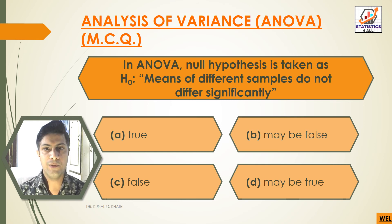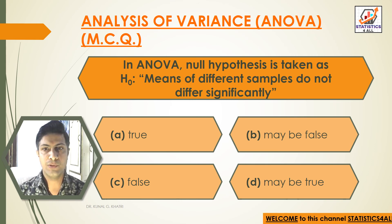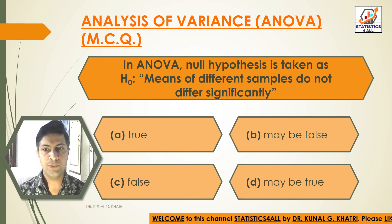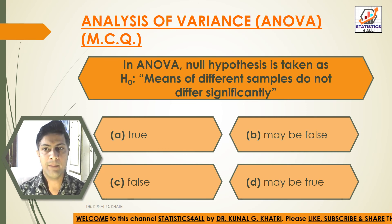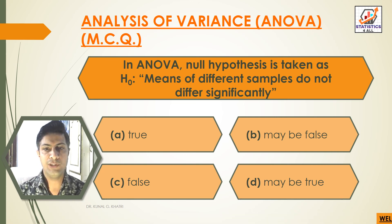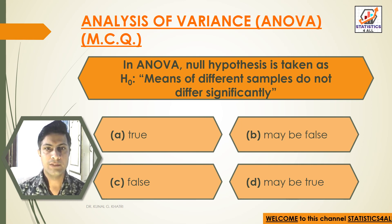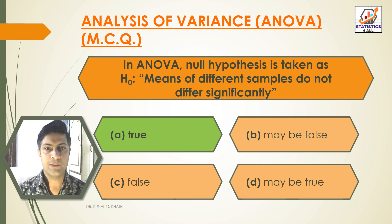Next question: In ANOVA, the null hypothesis is taken as H₀, meaning the means of different samples do not differ significantly. Option A: True. Option B: May be False. Option C: False. Option D: May be True. Answer: Option A, True. In ANOVA, the null hypothesis states that the means of different samples do not differ significantly.